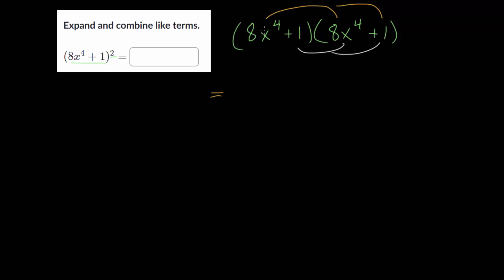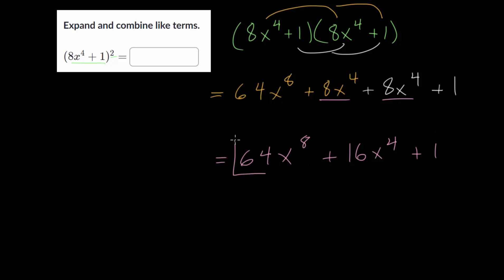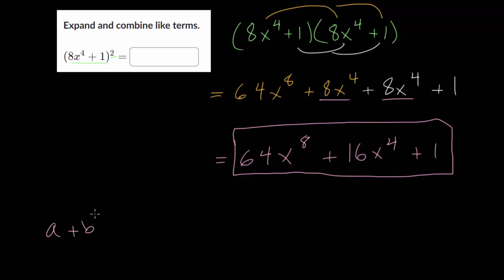Now we distribute 8x to the fourth to both terms, and also distribute the 1 to both terms. So 8x to the fourth times 8x to the fourth: 8 times 8 is 64, and we have 4 x's here and 4 more here, so in total we are multiplying 8 of them together, giving x to the eighth. Then 8x to the fourth times 1 is just positive 8x to the fourth. And 1 times 8x to the fourth is again 8x to the fourth, and 1 times 1 is just 1. We have like terms: 8 of these x to the fourths plus 8 more x to the fourths gives us 16x to the fourth. So our final answer is 64x to the eighth plus 16x to the fourth plus 1. I encourage you to use the formula a plus b squared equals a squared plus 2ab plus b squared to verify this on your own.